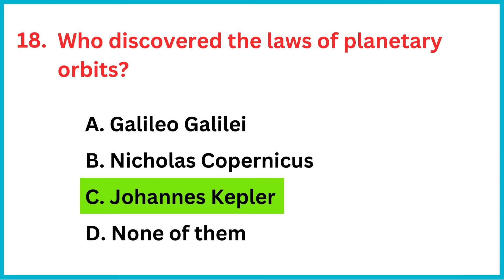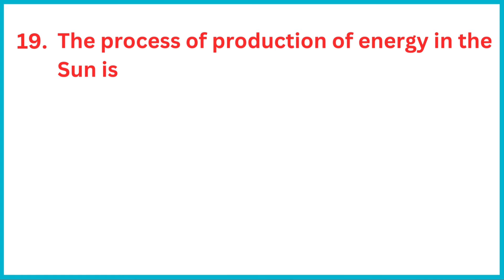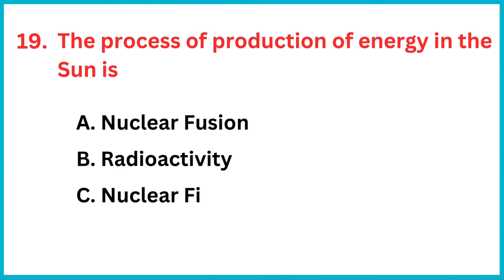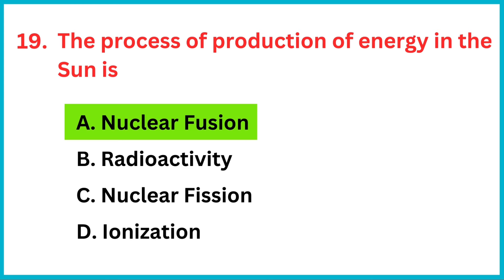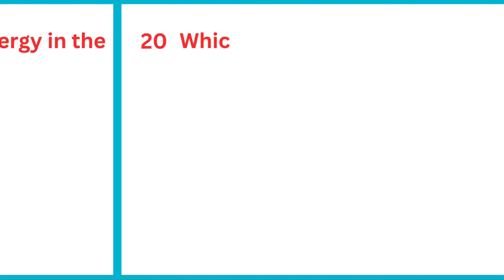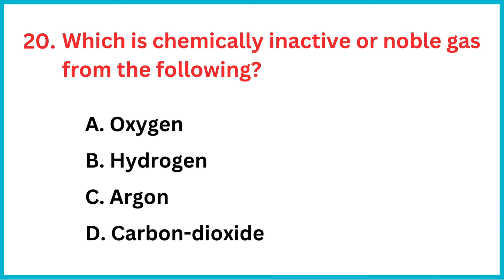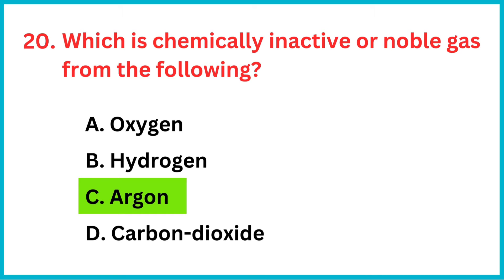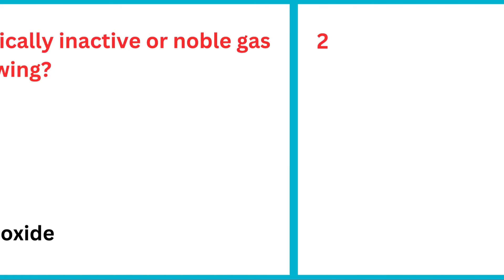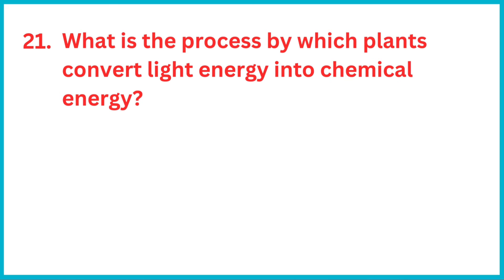Who discovered the laws of planetary orbits? The correct answer is option C: Johannes Kepler. The process of production of energy in the sun is — the correct answer is option A — nuclear fusion. Which is a chemically inactive or noble gas? The correct answer is option C: argon.